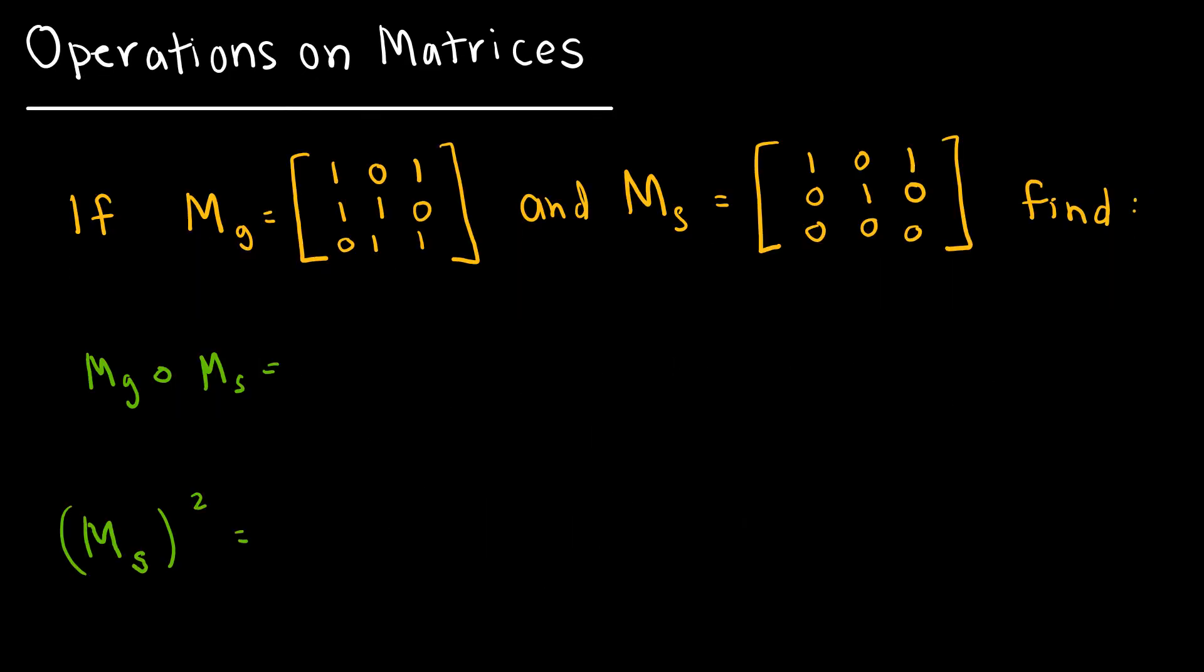Let's look at two more operations on matrices, or operations on relations that are represented by matrices. The first is composition. In composition, we find the composition by taking the Boolean product of the opposite order, because with composition we always go in the opposite order. You start from the inside out. So this is the matrix that represents relation S with the Boolean product of the matrix that represents relation G.